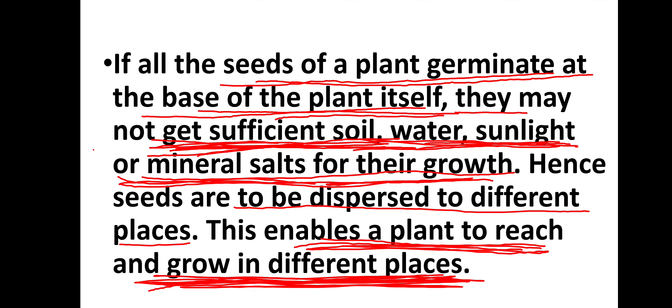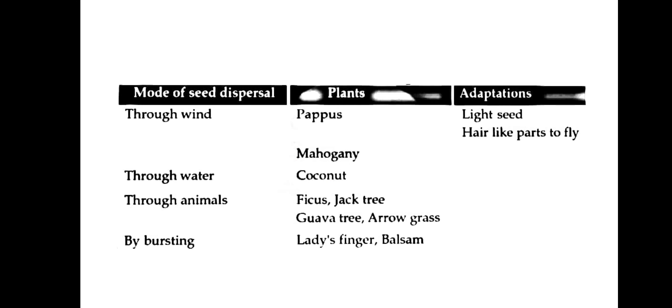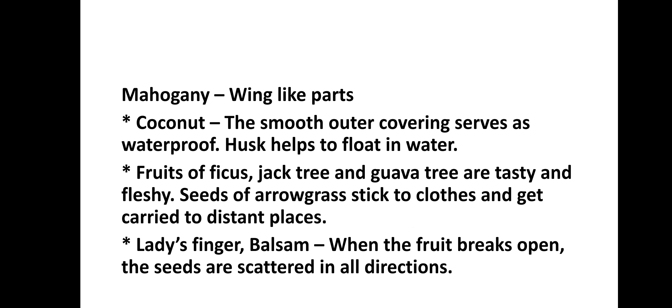Let's take a look at a table from our textbook. Through wind — Papas: these have light seeds with hair-like parts to fly. Through wind — Mahogany: has wing-like parts to help it fly through the wind.